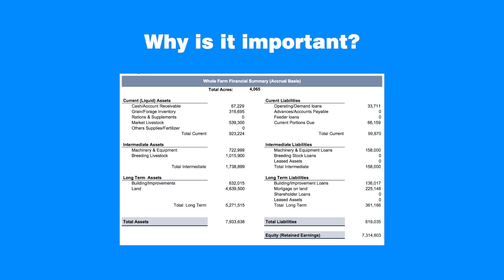As a year-end inventory of all assets, liabilities, and equity, the balance sheet allows the producer to monitor the overall business trend of a farm when comparing the results over several years. Also, specific measures of the balance sheet like types of assets and liabilities are used to calculate performance indicators known as financial ratios. These indicators are important for determining a farm's ability to pay debt, its cash position, and efficient use of the business assets.